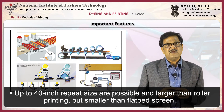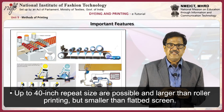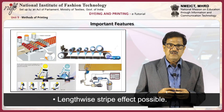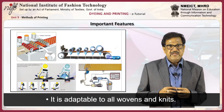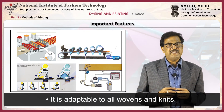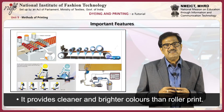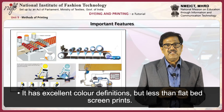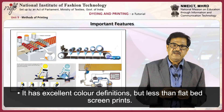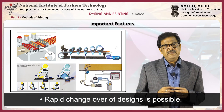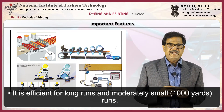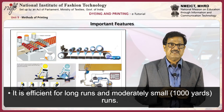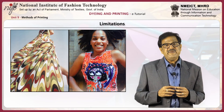The repeat size is larger than roller printing but smaller than flatbed screen printing. Lengthwise stripe effects and fall-on designs are possible. It is adaptable to both woven and knitted fabrics. It provides cleaner and brighter colors than roller printing. It has excellent color definition, but less than flatbed screen printing. Rapid changeover of design is possible, and it is efficient for longer runs and moderately small quantities like a thousand yards.